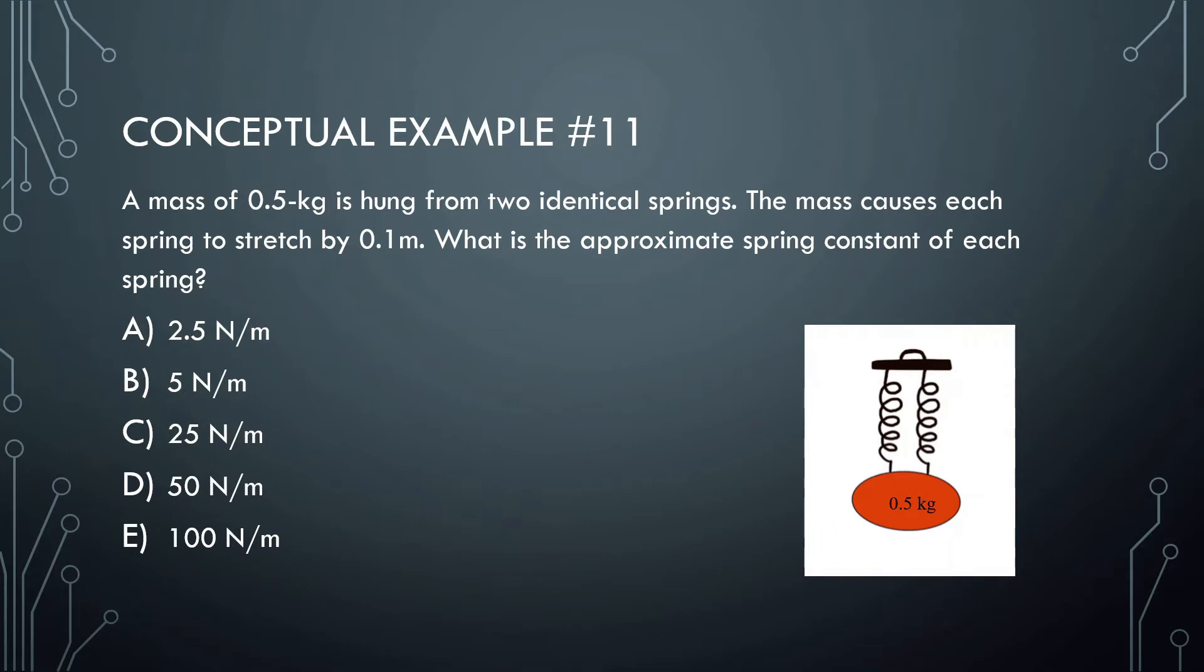A mass of 0.5 kilograms is hung from two identical springs. The mass causes each spring to stretch 0.1 meters. What is the approximate spring constant of each spring? Okay, so we want to know what this k is equal to and what this k is equal to. We know that they're both the same, but we want to know what these are equal to. So what we should know is once this is put on, it gets stretched 0.1 meters. Meaning at this point, the force of gravity is equal to the force of the springs. Okay, they're in equilibrium.